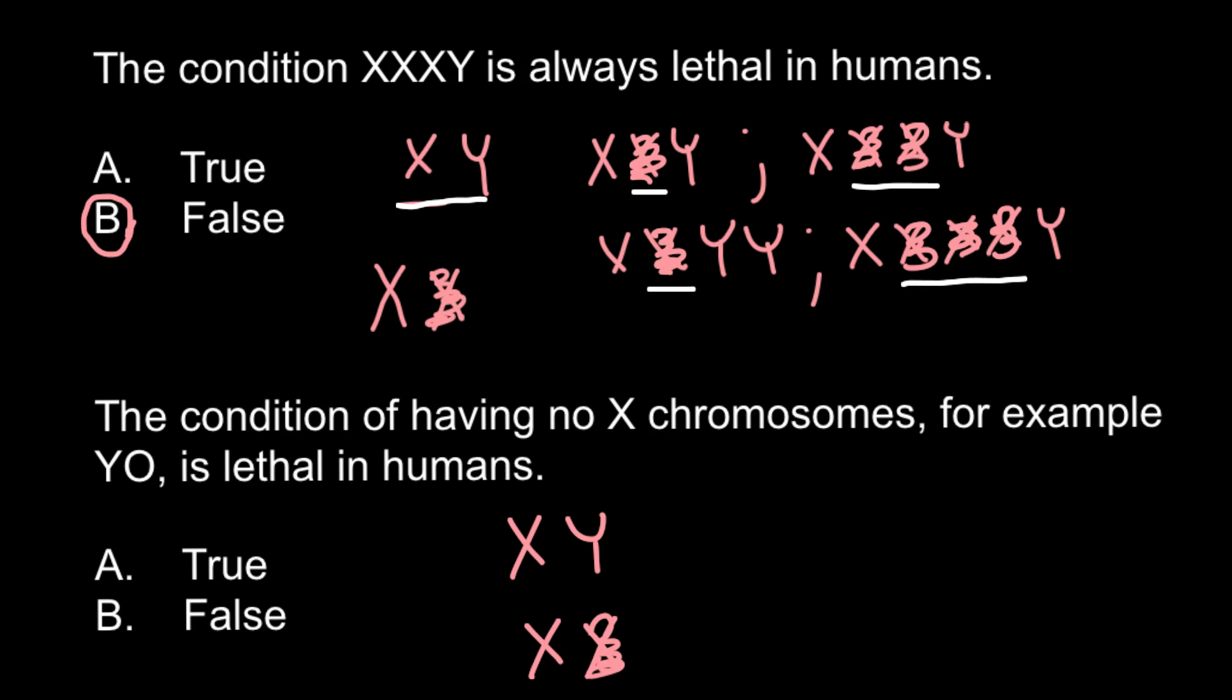Now let me draw these genotypes as they actually look like. So here is X chromosome and here is Y chromosome. Here is one X chromosome and another deactivated X chromosome.